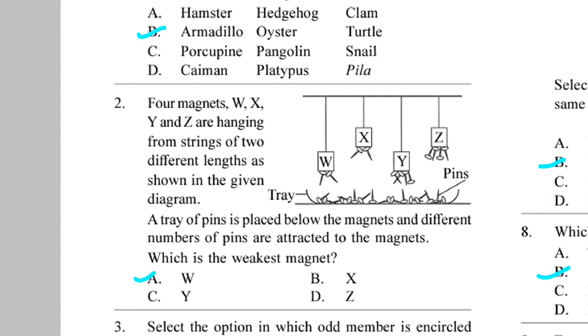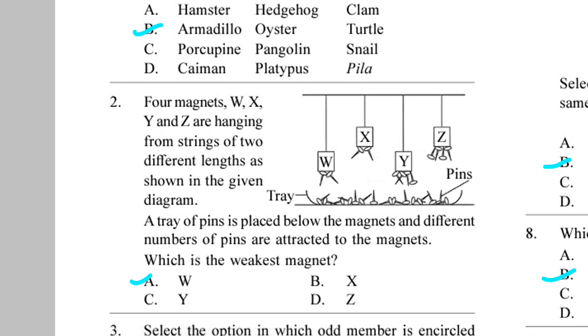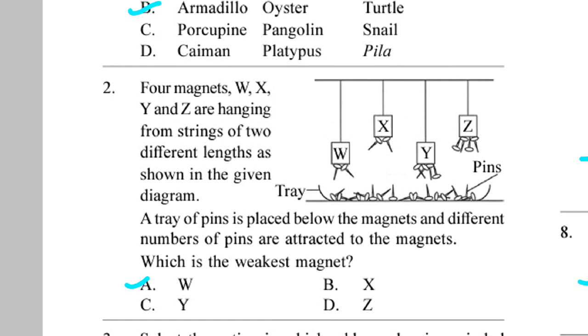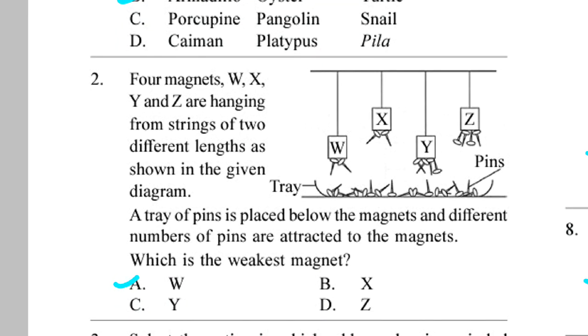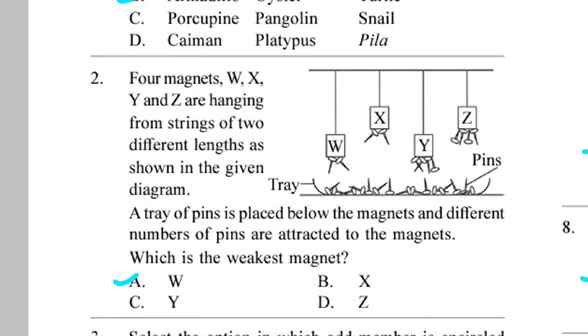Question 2. Four magnets W, X, Y and Z are hanging from strings of two different lengths as shown in the given diagram. A tray of pins is placed below the magnets and different number of pins are attracted to the magnets. Which is the weakest magnet? Answer is option A.